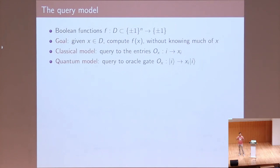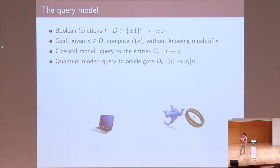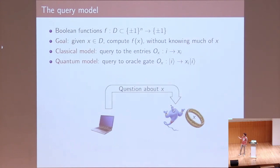In the quantum model, the classical oracle becomes a gate — an analytical gate — that maps elements of a fixed basis in a hybrid space to the i-th element times the i-th entry of the input. This generalizes the classical oracle. The quantum world is more powerful because you can do things in superposition, use complex phases, and obtain quantum speedups. The cost is the number of rounds of questions made to the oracle.